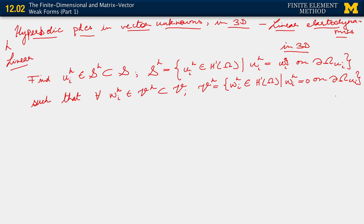So find u_i^h such that for all w_i^h belonging to V^h the following condition holds. The usual integral equation, except now we have the one extra term, the term that's second order in time.